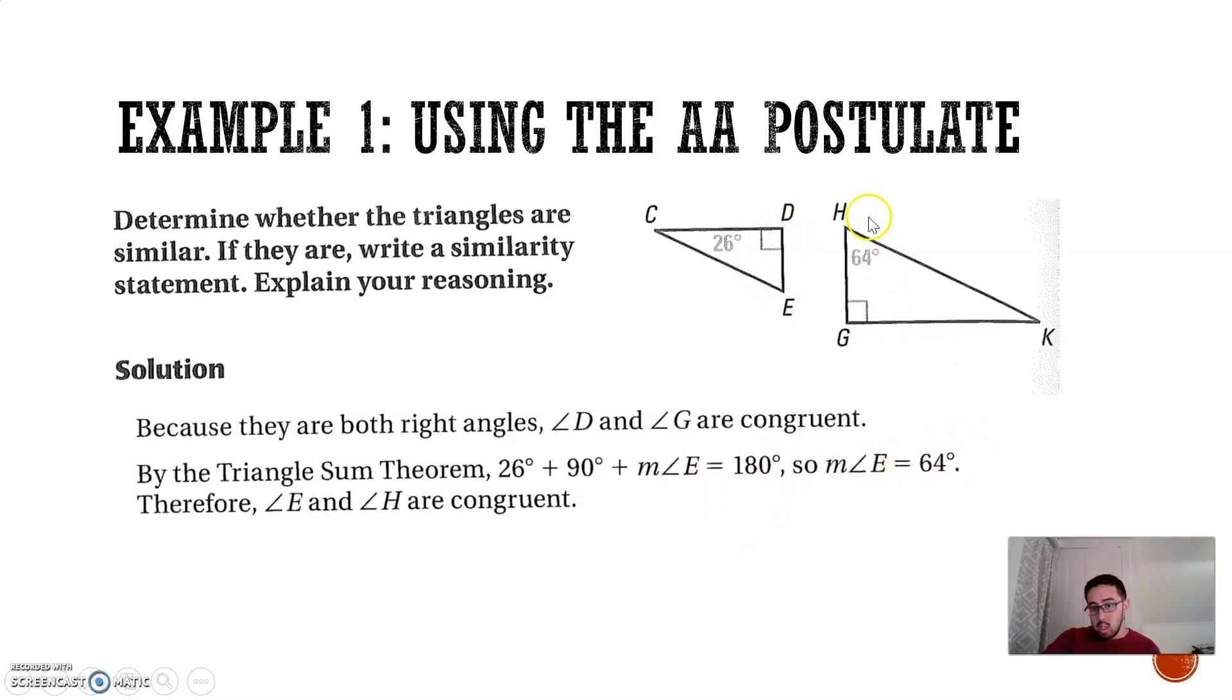So that means E must equal 64, which means E and H are congruent. And because E and H are congruent, that means I have two angles that are equal, and actually the third angle is also equal, so we know that the two triangles are similar.